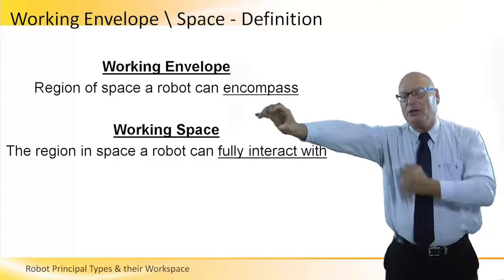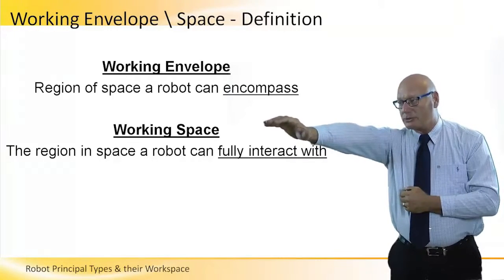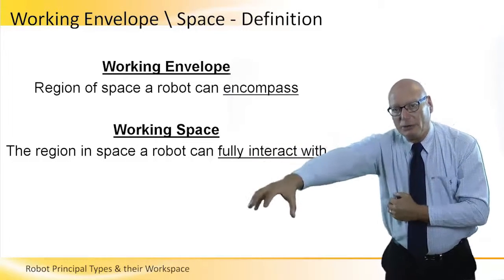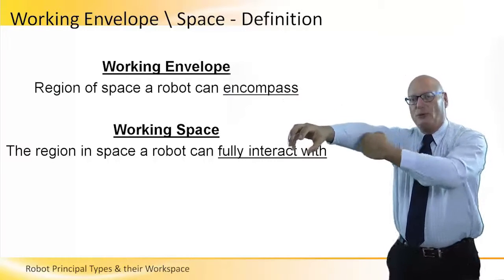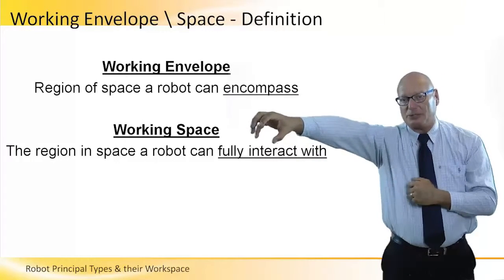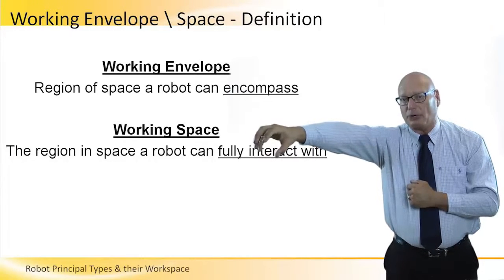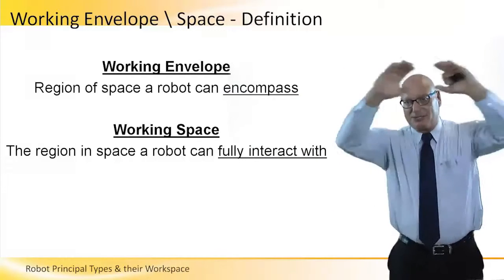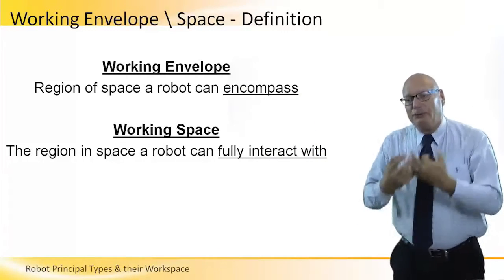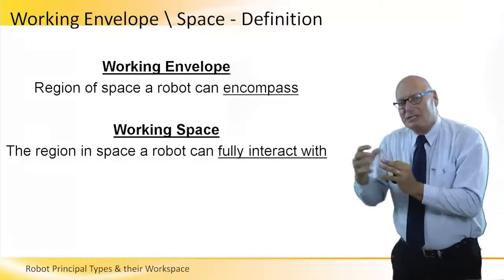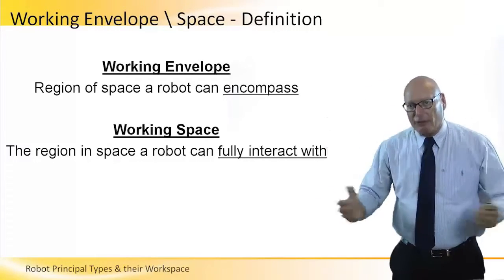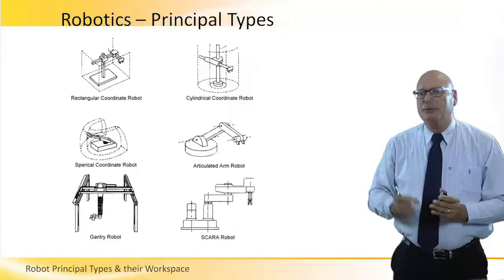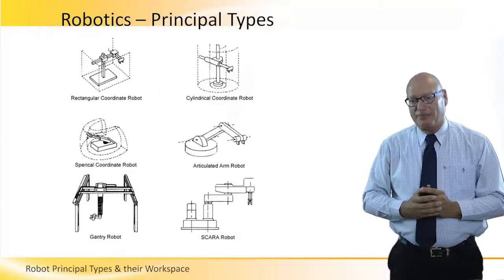This is because of some mechanical limitations, vibrations that might take place in the arm, or when lifting heavy things where the arm is fully extended outside, which might create some reliability problems. So mathematically and theoretically speaking, the envelope is what it is, but effectively the fully interactive region is maybe 70 to 80 percent of the working envelope.